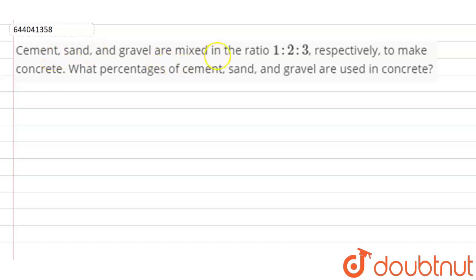Cement, sand and gravel are mixed in the ratio 1 to 2 to 3 respectively to make concrete. What percentages of cement, sand and gravel are used in concrete?